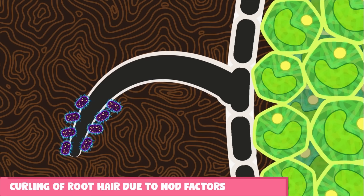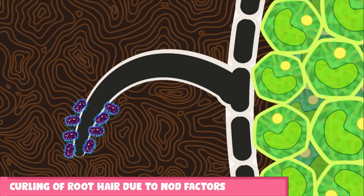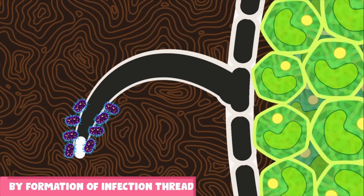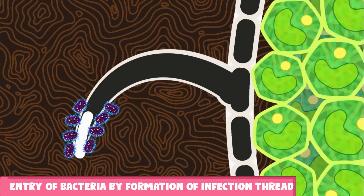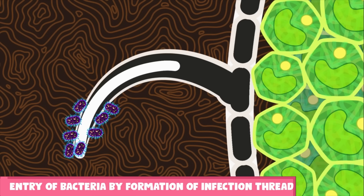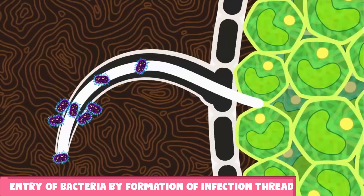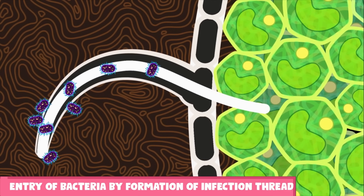The bacteria then digest the cell wall of the root hair and start entering inside it. However, the bacteria never enter the cytoplasm of the root hair; this entry is achieved by the invagination of the cell membrane. The structure formed due to this invagination is called the infection thread, through which the bacteria enter inside the root.